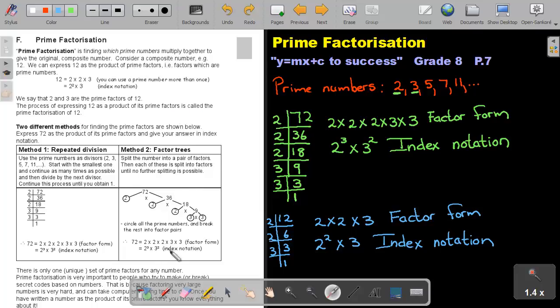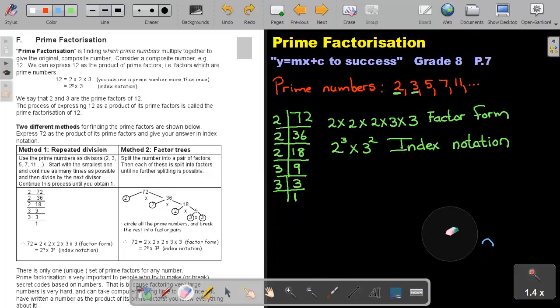Now, I want to show you the other method. This was repeated division. And method 2 will be factor trees. Let's just create space. So again, let's take 72 and do the other method. I take 72 and I split the number into pairs of factors. Meaning, I look what two numbers multiply to give me 72. We can start with 2. So 2 times 36 will give me 72.